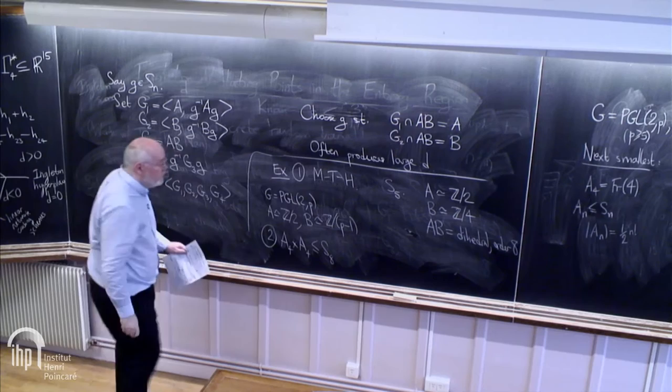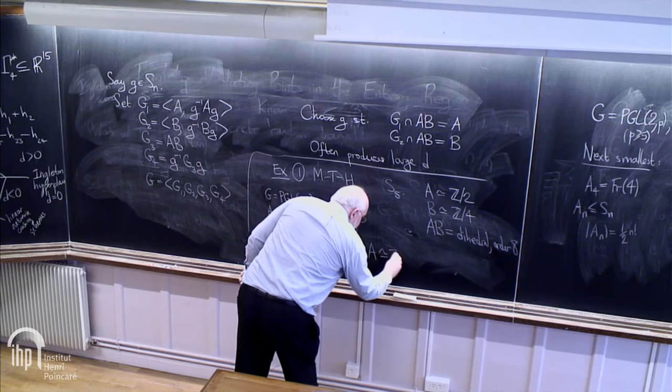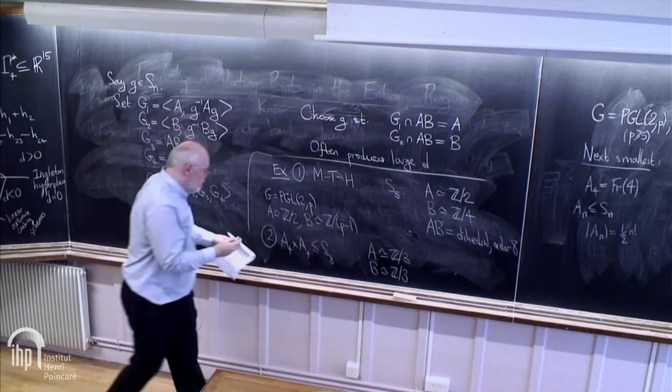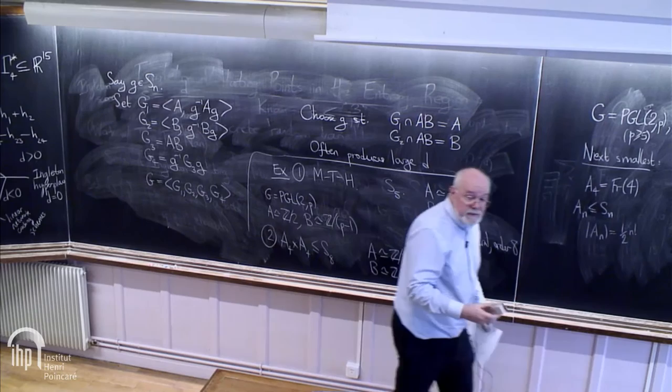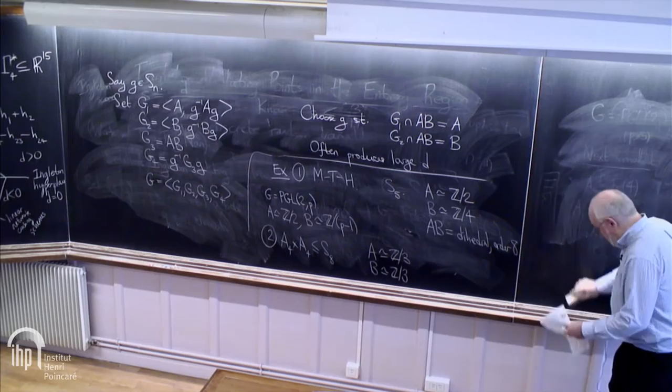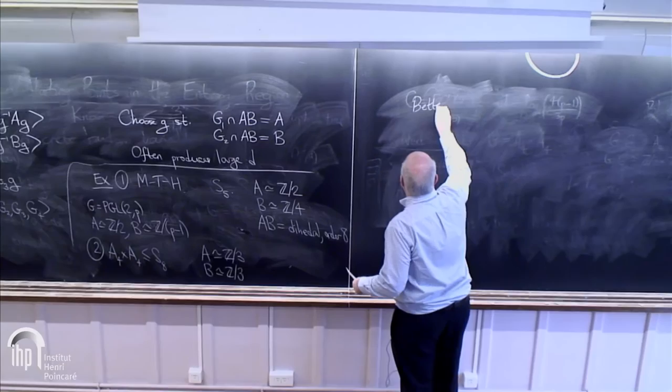You get it if you take A, a certain cyclic subgroup order 3. The interesting thing is, can we use this to generate more examples? We can get some seriously large D's and S's using this example. Here's a better example, kind of a curious example.